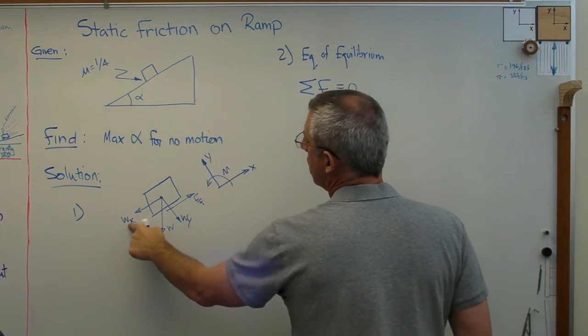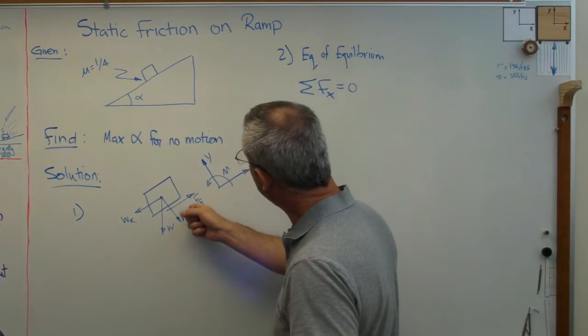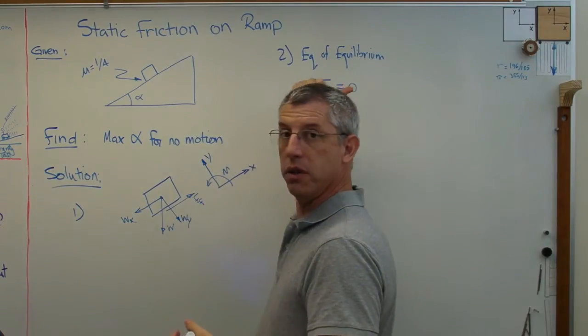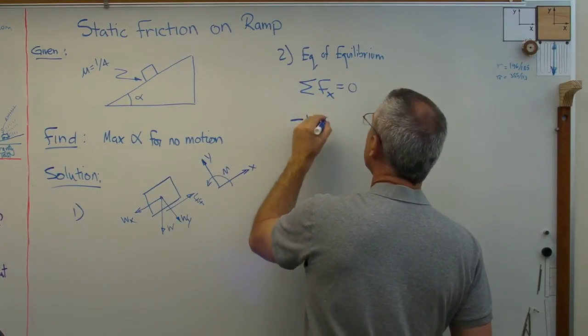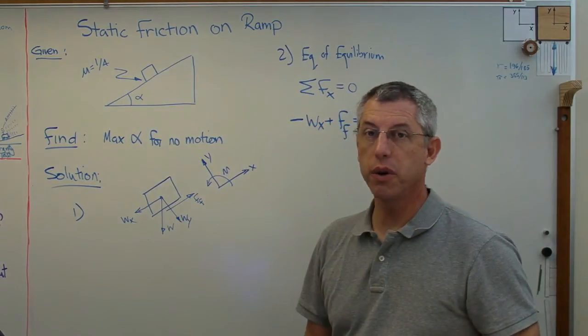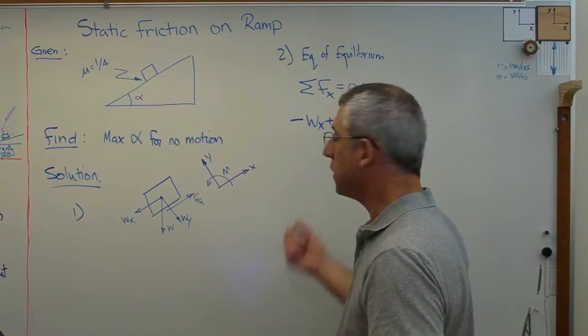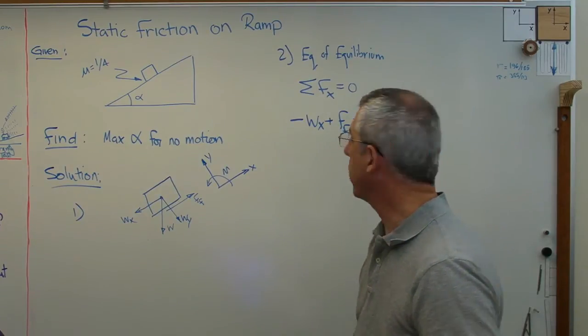Well, let's see. W_X goes in the negative X direction, and F, the friction force, goes in the positive X direction. So I'll say minus W_X plus friction force equals zero. And that's it. There is no other force in the X direction. So that's pretty straightforward. All I've got to do now is write those in some form I can work with.